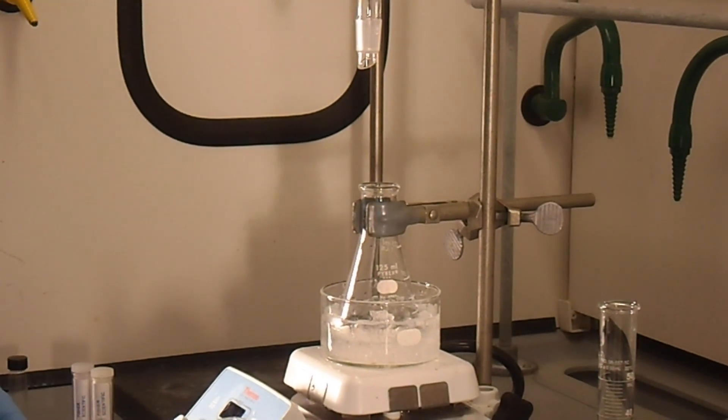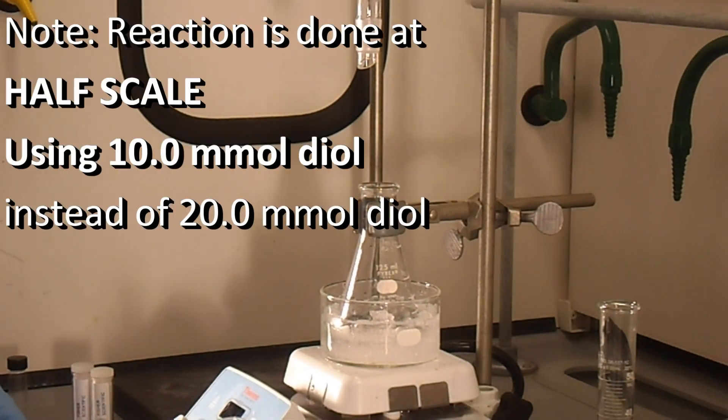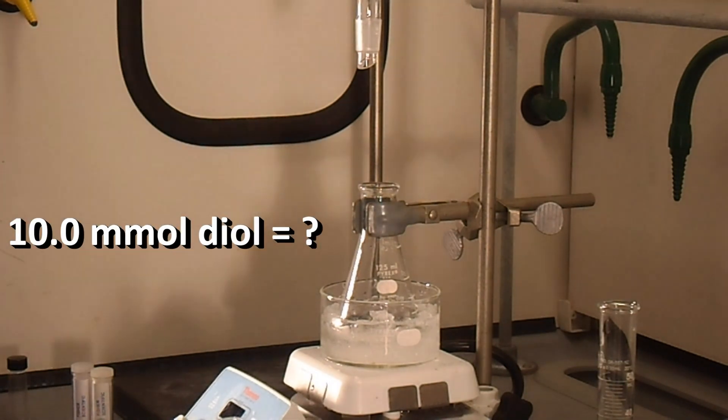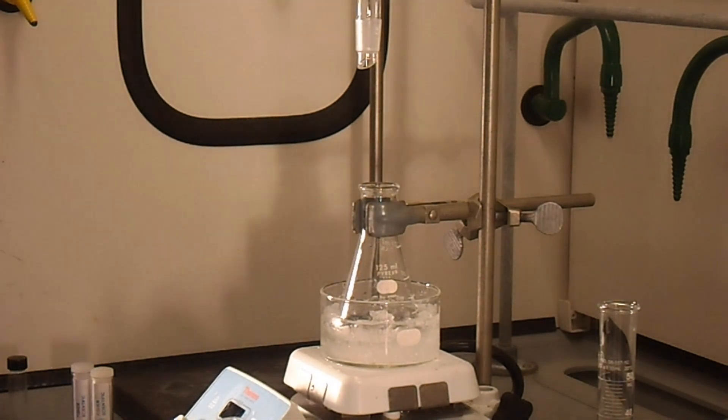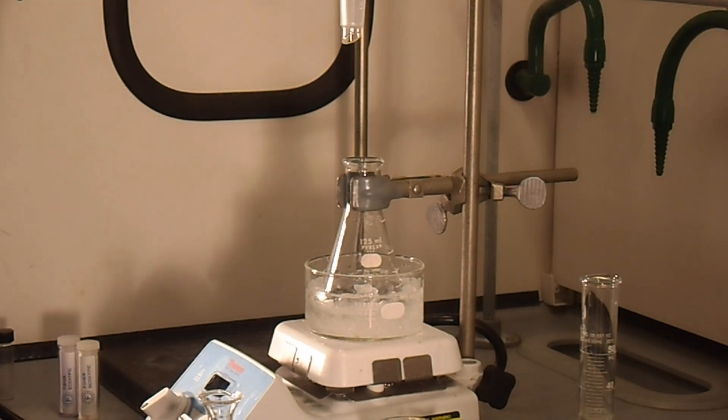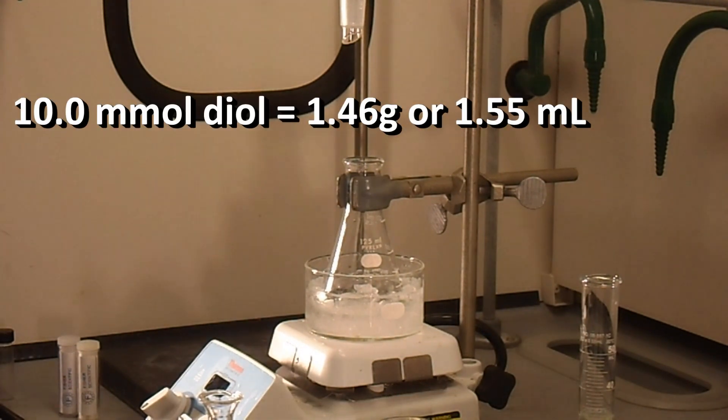We have our Erlenmeyer flask that has our pre-weighed diol. The procedures say to use 10 millimoles of diol. If you could please calculate for me how much diol that is in grams or in milliliters. You should have come up with at least 1.4 grams of diol or 1.55 milliliters of diol.